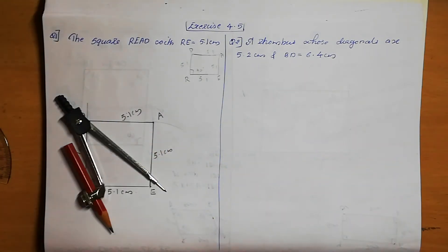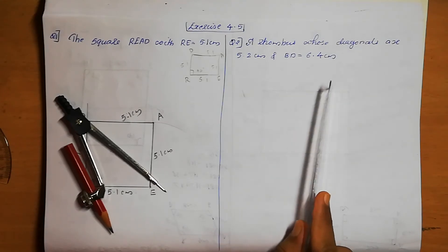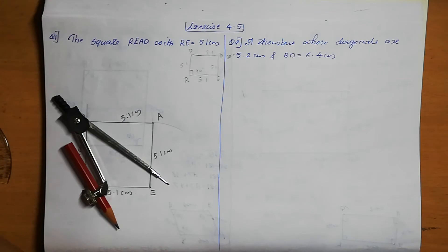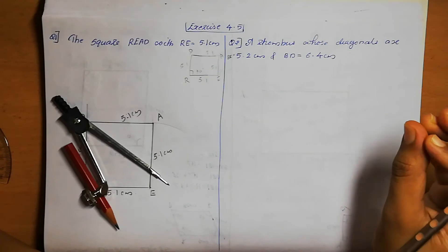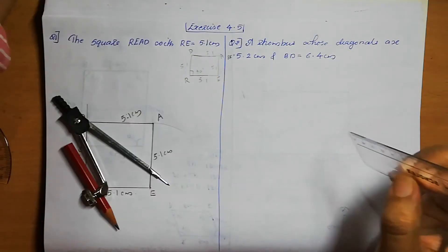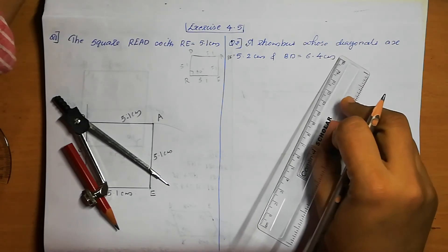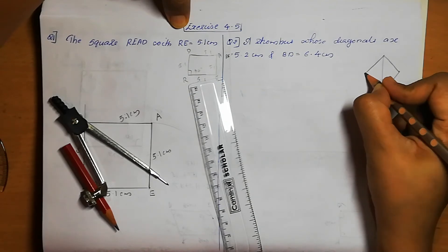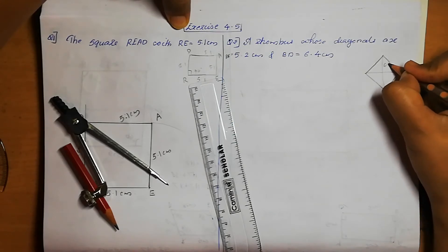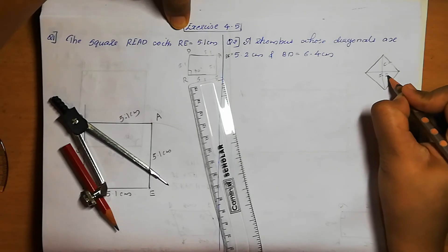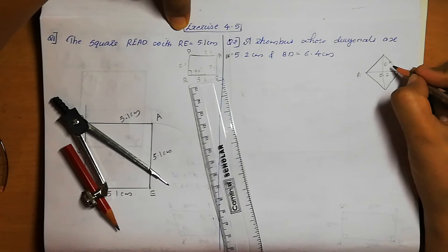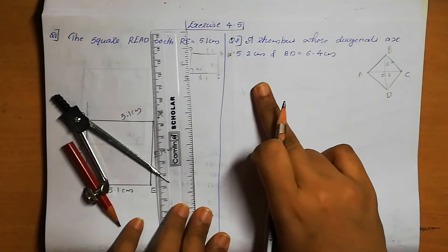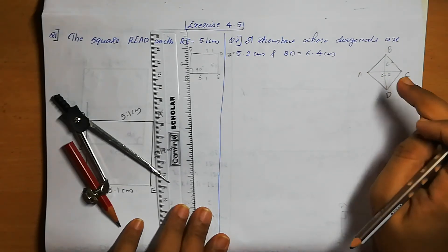Question 2: construct a rhombus with diagonals AC = 5.2 cm and BD = 6.4 cm. In a rhombus, the diagonals bisect each other at the midpoint and all sides are equal. We use the diagonals to construct the rhombus ABCD. First draw diagonal AC = 5.2 cm.